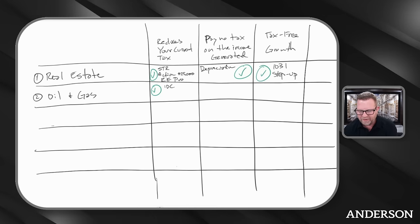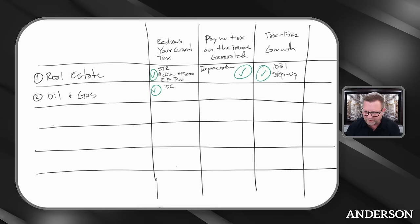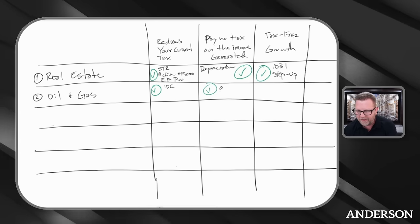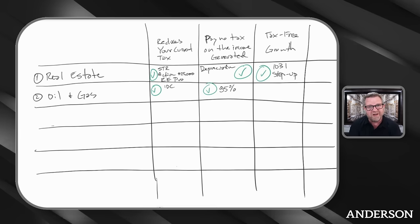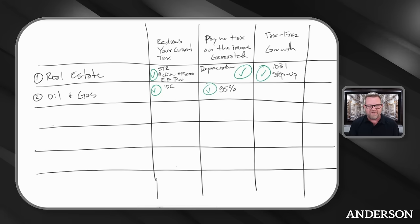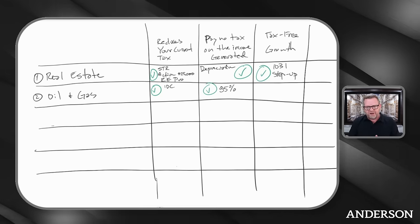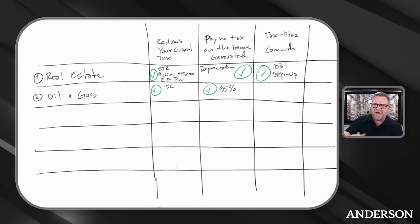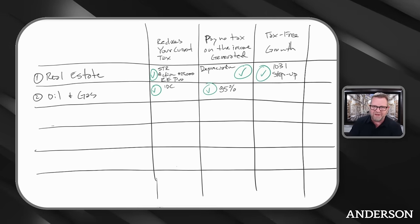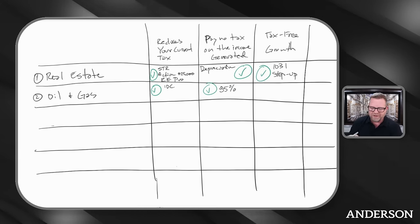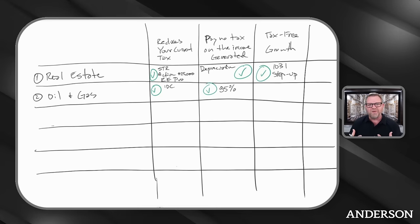How about paying tax on the income? You do pay tax on the income that it generates. But I'm still going to get a check mark because you have what's called depletion. You're only having to pay tax on 85% of the revenue that it produces when you're selling the oil.